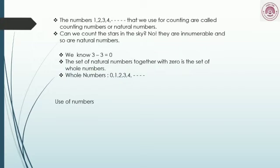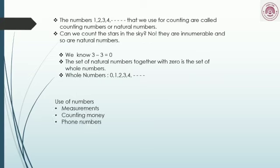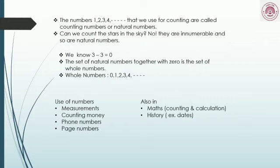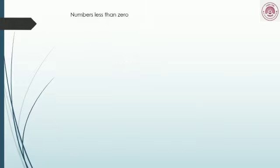In mathematics, numbers are used to count, measure, and calculate. Numbers arise from counting objects. We use numbers in counting money, measurements, passwords, and page numbers. We also use numbers in mathematics, history, geography, and science. We can show the temperature of a place using whole numbers — say, 37 degrees centigrade.